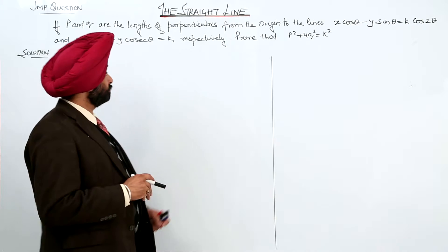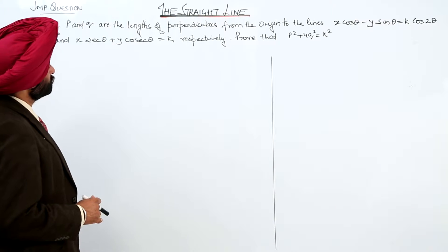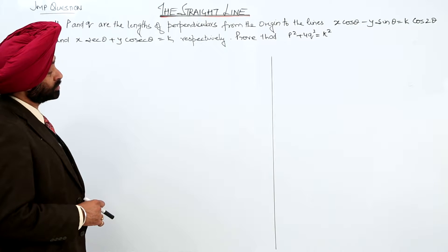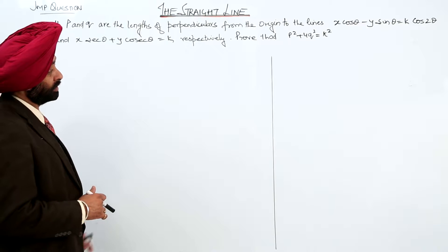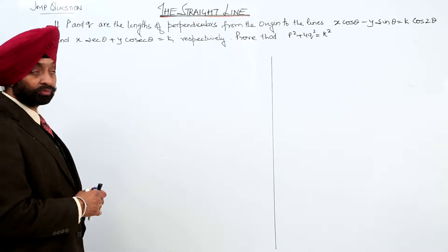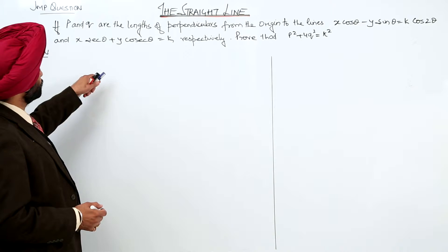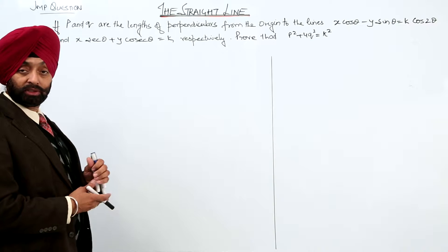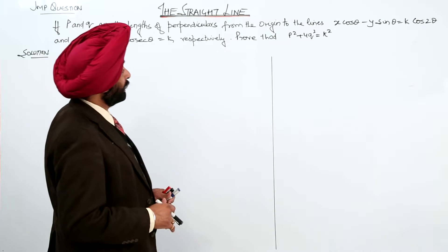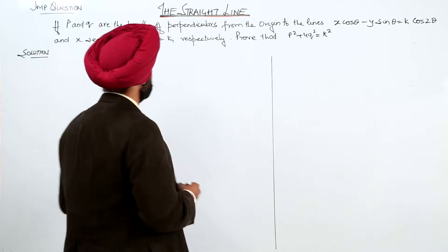Now a very important question: if p and q are the lengths of the perpendicular from the origin to the lines x cos θ − y sin θ = k cos 2θ and x sec θ + y cosec θ = k respectively, then we have to prove that p² + 4q² = k².